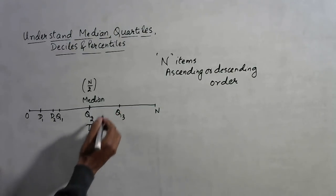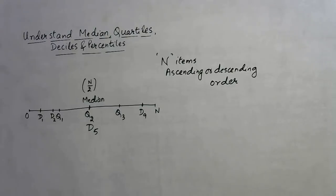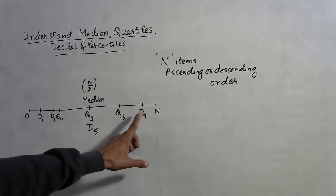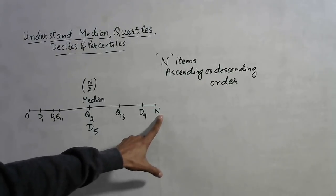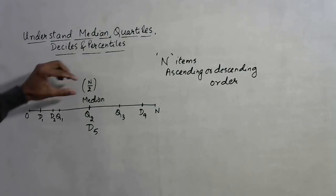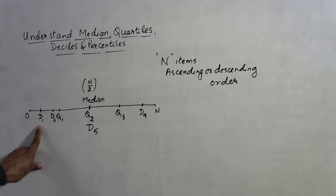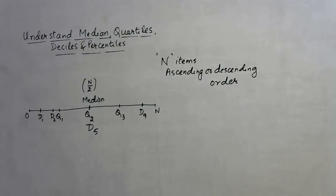Can you estimate which value is D9? The ninth decile is the value below which 90% of data lie and above which 10% lie. There are 9 deciles to be precise. For D1, instead of n/2, we use n/10. Likewise, we use 2n/10 for D2, and 9n/10 for D9. Once you know how to calculate the median, everything else becomes clear.